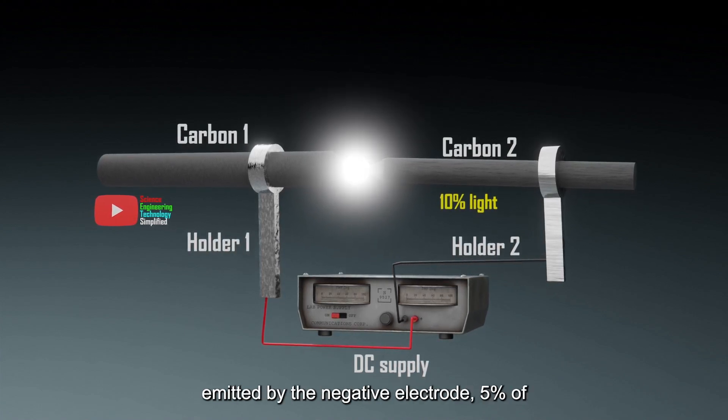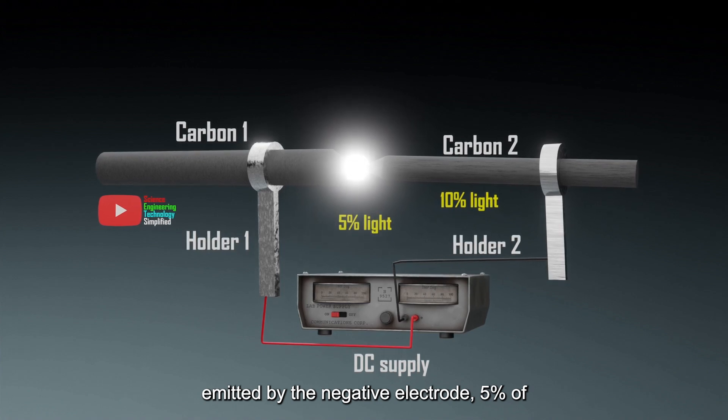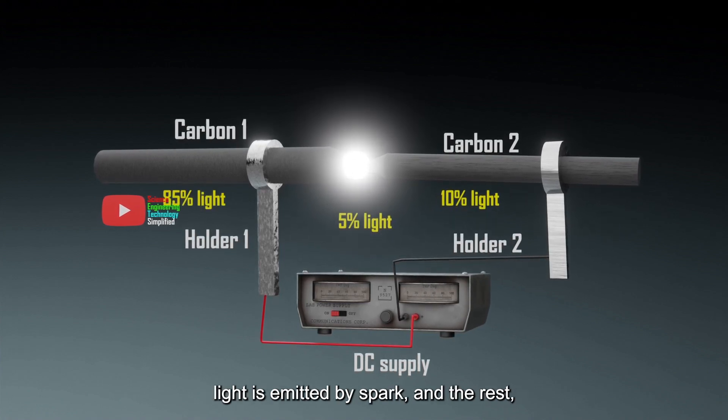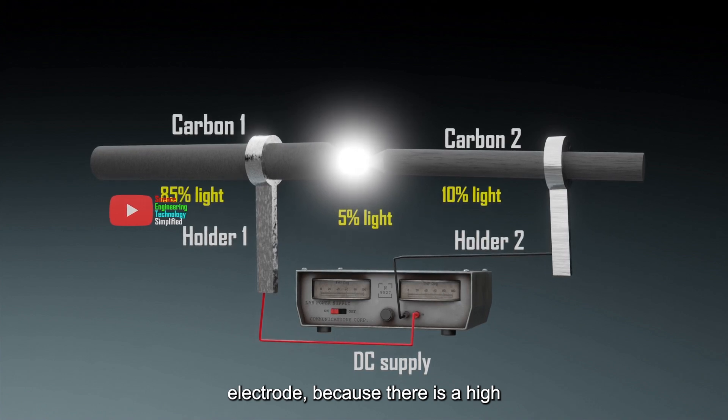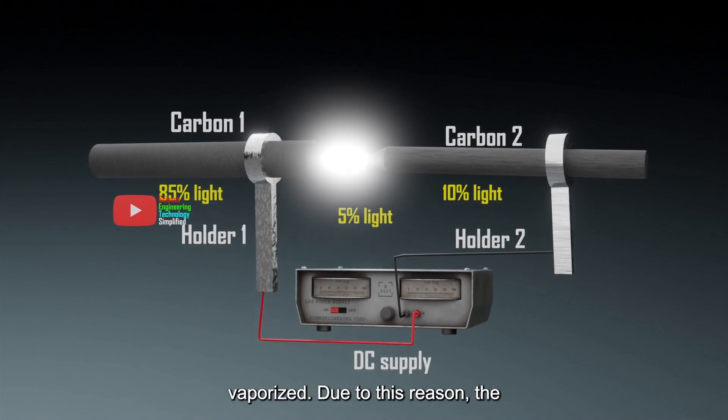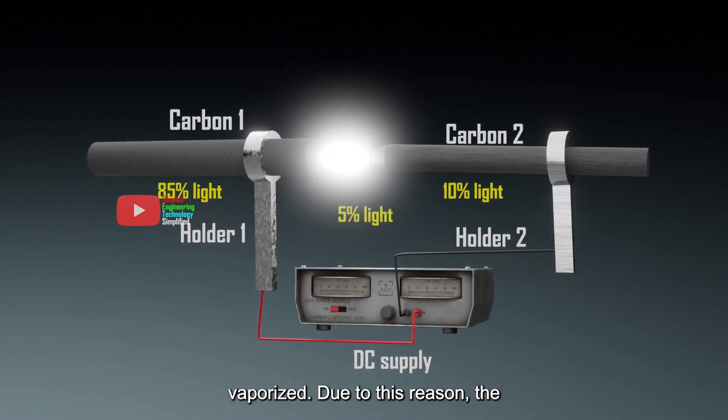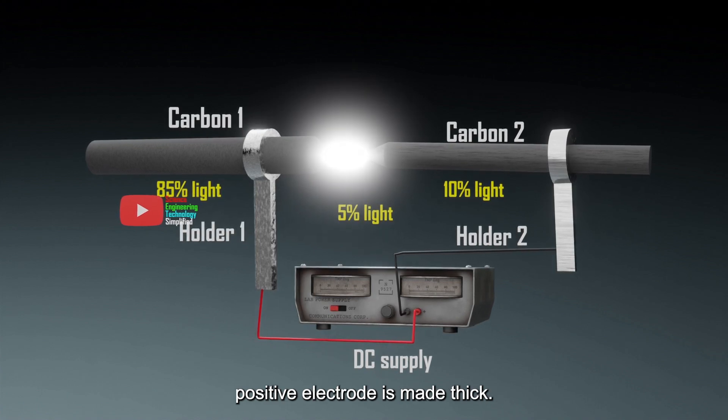10% of light is emitted by the negative electrode, 5% of light is emitted by spark, and the rest 85% of light is emitted by the positive electrode, because there is a high temperature, so more carbons are vaporized. Due to this reason, the positive electrode is made thick.